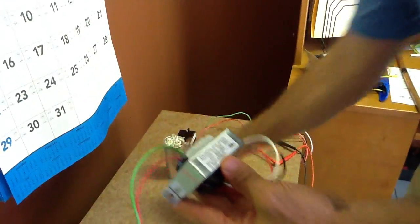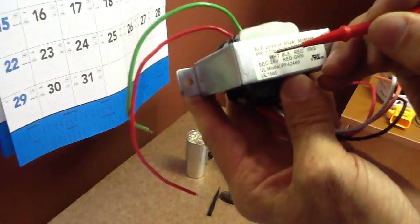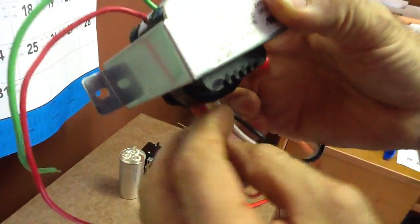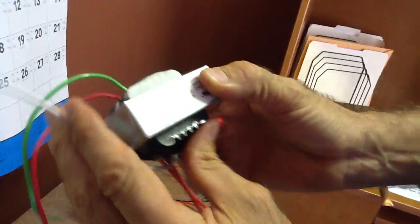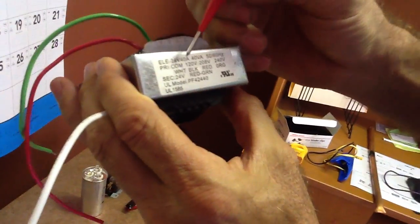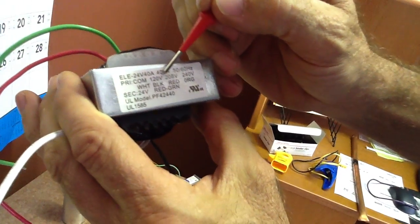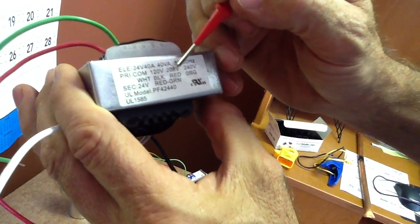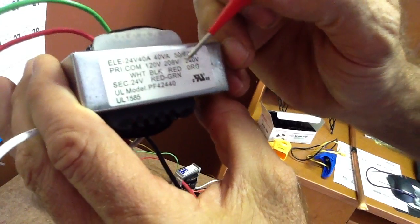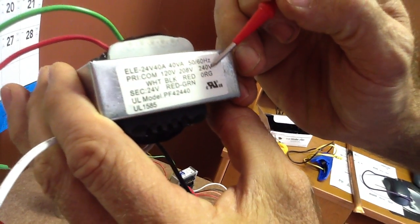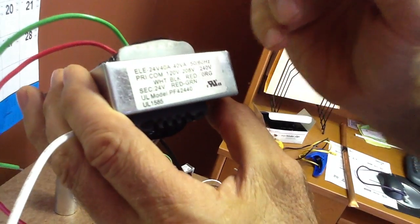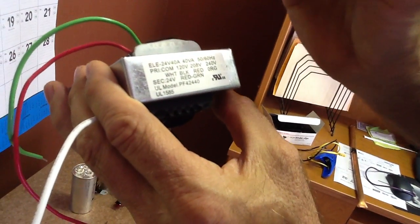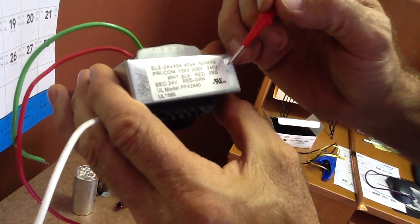First thing I'm going to talk about is primary common, which is your white wire. Common means no matter how you hook it up, you're always going to use the white wire. The black is 120 volt, the red is your 208 volt, your orange is 240 volts. In most houses it's going to be 240 volts, and sometimes in high-rise condos it'll be 208 volts.